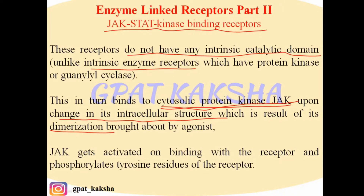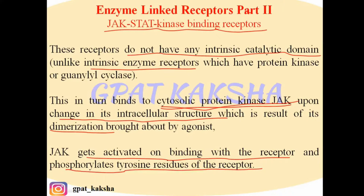This Janus kinase gets activated on binding with the receptor. Janus kinase is present in the cytoplasm of the cell, and upon dimerization of the JAK-STAT kinase binding receptor, the JAK present in free form in the cytoplasm gets associated with the receptor. After binding, this JAK Janus kinase enzyme gets activated and phosphorylates the tyrosine residues of the receptor.